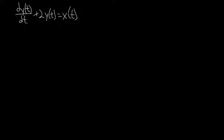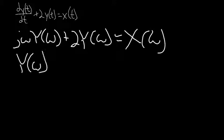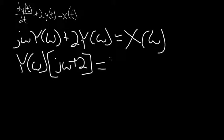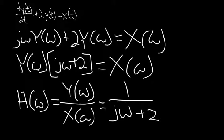To solve the differential equation, we convert it to frequency form and get j-omega times Y(ω) plus 2Y(ω) equals X(ω). Simplifying, we get Y(ω) times the quantity (j-omega plus 2) equals X(ω). Therefore H(ω) equals 1 over (j-omega plus 2).